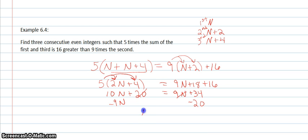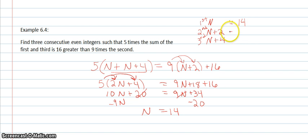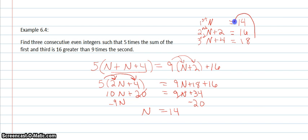So I'll have n equals 14. So I have my first consecutive even integer. But I still need the second and third, so those will be 16 and 18. So I'll have my three consecutive even integers: 14, 16, and 18.